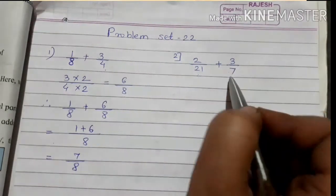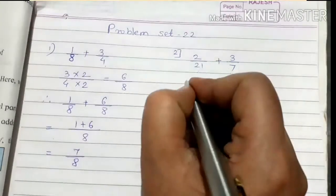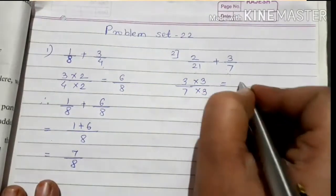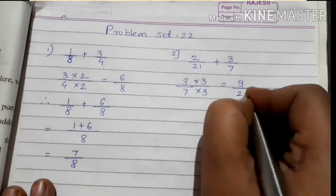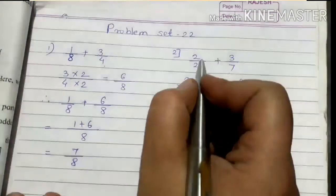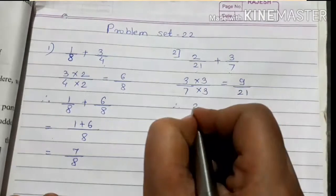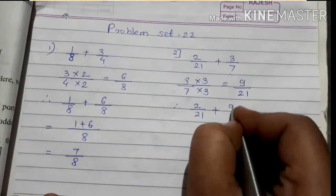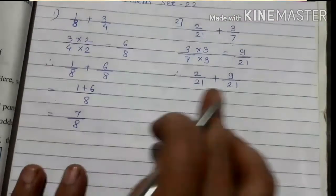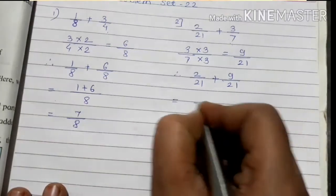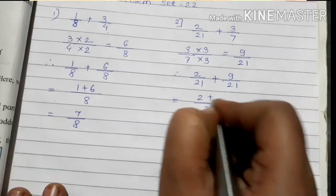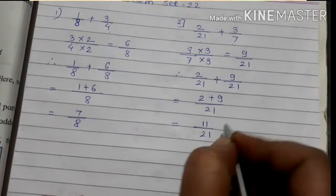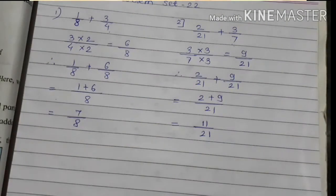So for this fraction, if we multiply by 3 we get denominator 21. Taking fraction 3 upon 7 and multiplying by 3: 3 threes are 9, and 7 threes are 21. So we write 2 upon 21 as it is, plus 3 upon 7 becomes 9 upon 21. Now the denominators are equal at 21. Write 21 once and add the numerators: 2 plus 9 is 11. The answer is 11 upon 21.